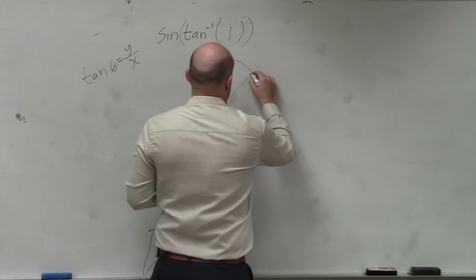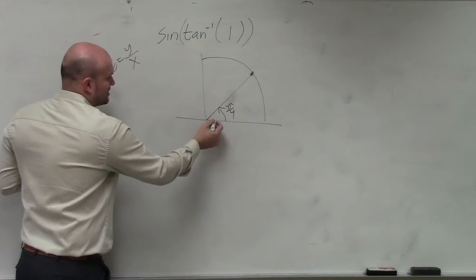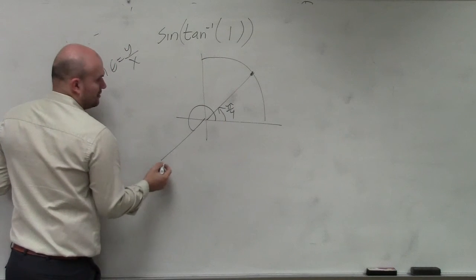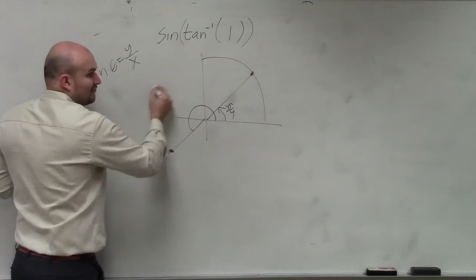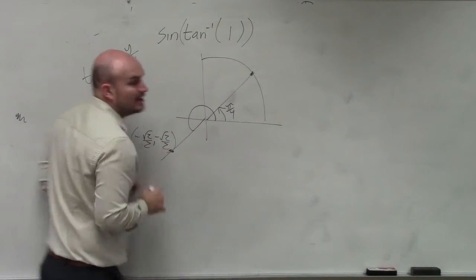Pi over 4, or 45 degrees. The other angle is going to be way over here, right? The reflection would be negative square root of 2 over 2, comma negative square root of 2 over 2. Do you guys agree?